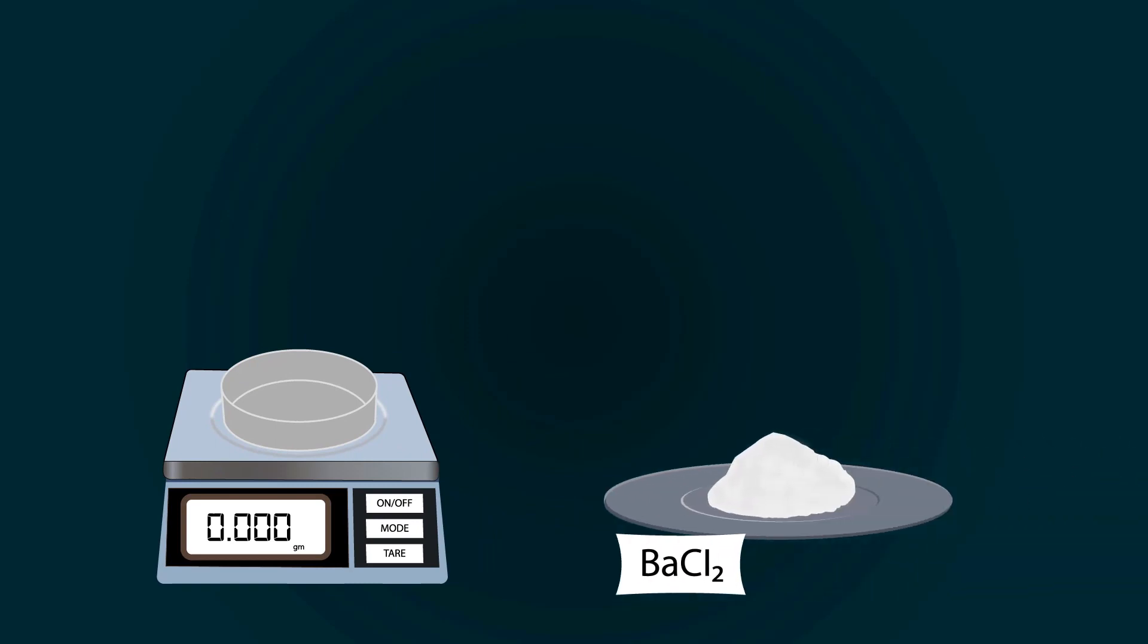Now add barium chloride into the petri dish with the help of a spatula. Weigh precisely up to 10 grams.